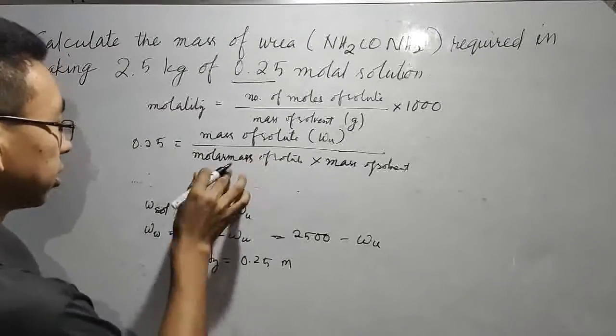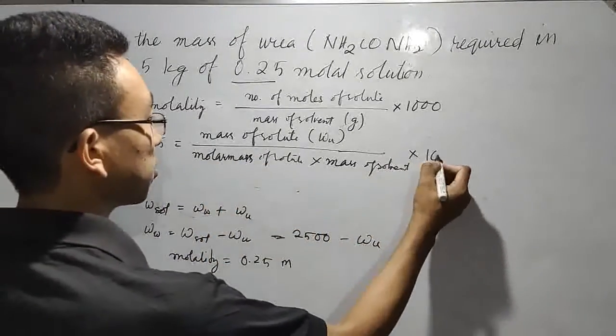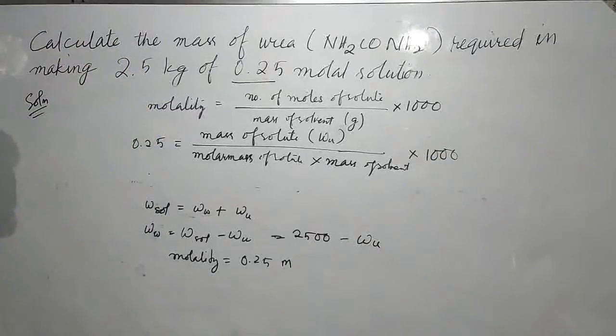Eventually this molar mass will come to the denominator, so I'm just directly writing this. We will multiply by 1,000.